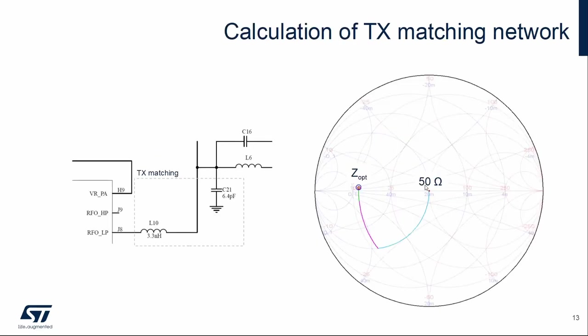Ideal values of the transmitter matching network can be easily calculated in the Smith chart. We want to transform impedance 50 ohms to optimal load impedance. We can use 6.4 pF parallel capacitor and 3.3 nH serial inductor. Then we also assume small impact of ideal transmission line. Measurement point is here.